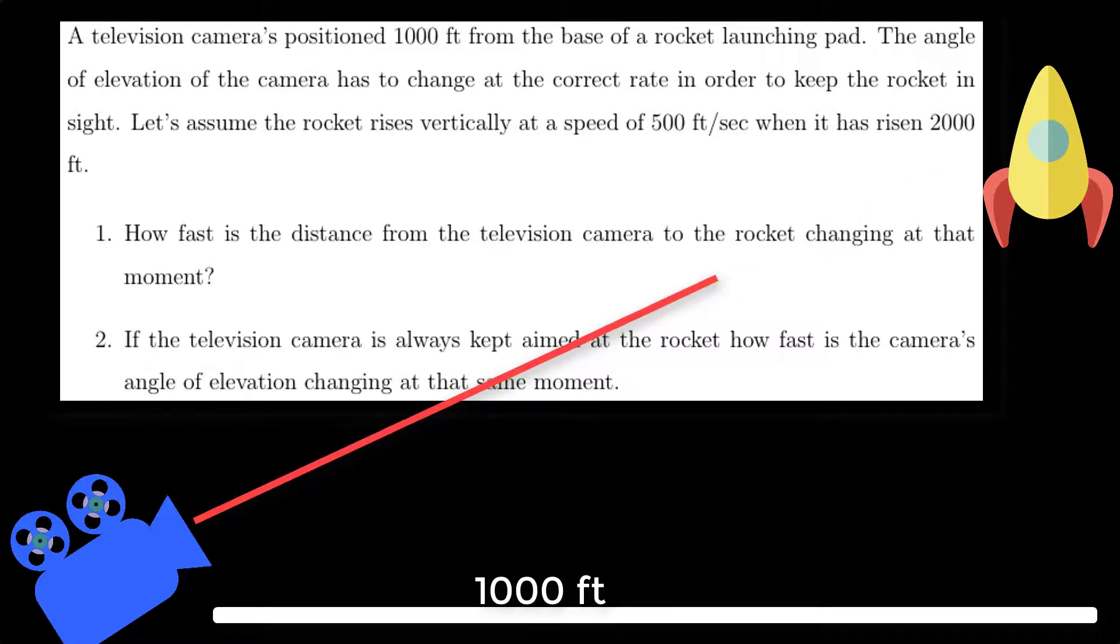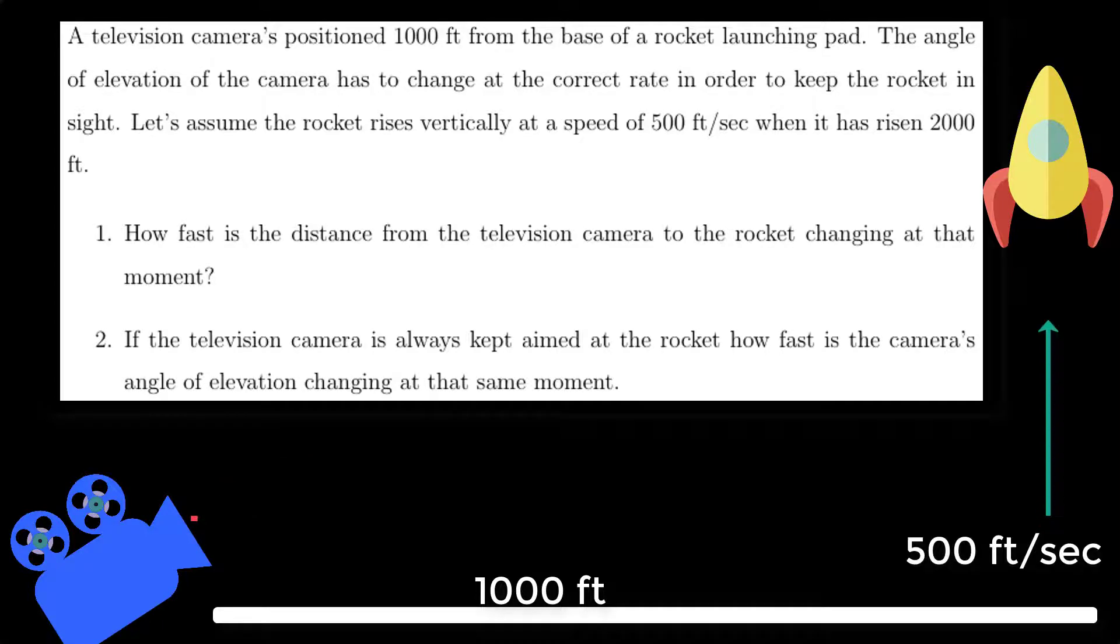Let's assume the rocket rises vertically at 500 feet per second when it has risen 2,000 feet. Now, part A was how fast is the distance from the television camera to the rocket changing at that moment, and we have done that in part A of the rocket ship problem. So again, go check that out.